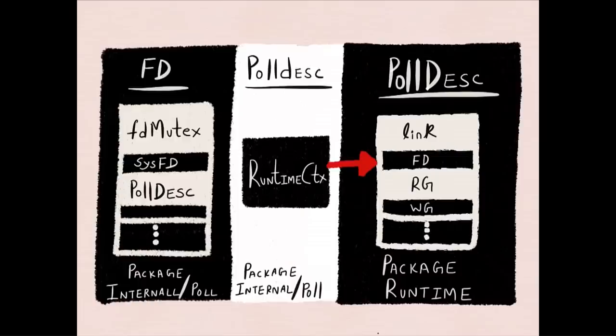Coming back to the data structures used by Go — the runtime context is really just a registration of the file descriptor with the ePoll instance, which also stores certain other metadata, such as which goroutine was the one that spawned the accept call that resulted in the file descriptor being registered with ePoll.